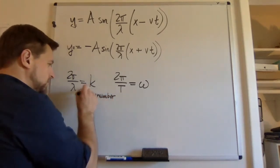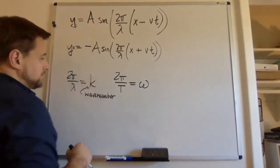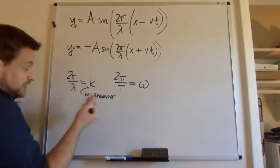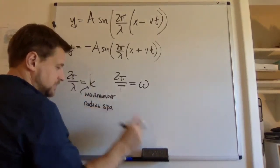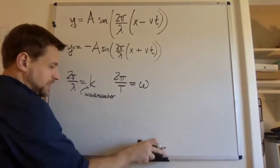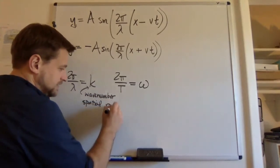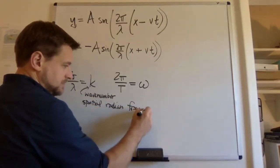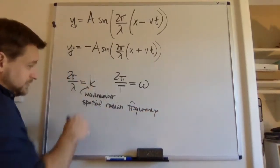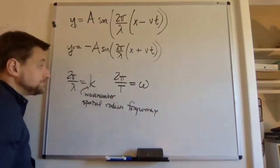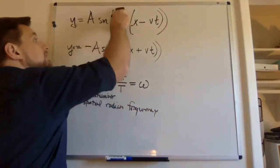It gets a horrible name. It gets called wave number, but what it actually is, is the spatial radian frequency. That's really what this is. We give it the name wave number. All right, so I'll change that, make that k.